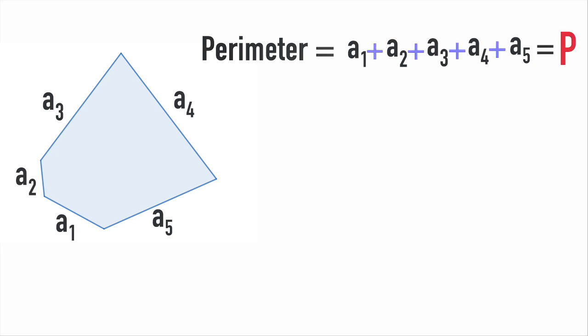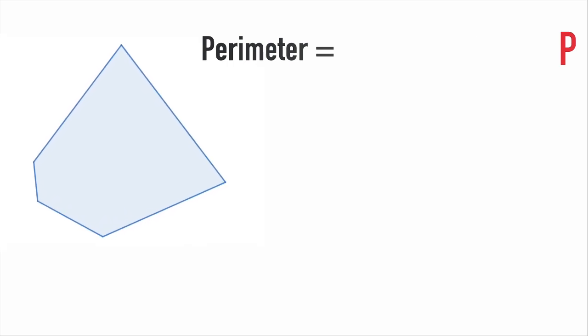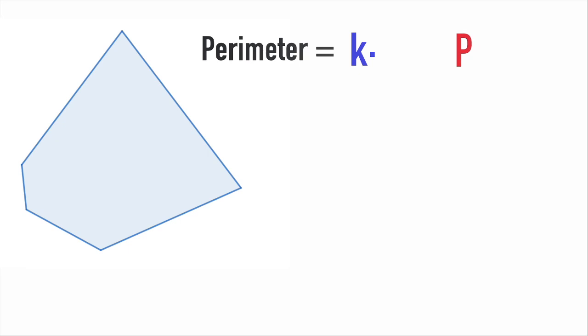For polygons, perimeter is the sum of lengths of all of its sides. Perimeter is a linear function of side length, meaning that if you increase the sides by some factor, the perimeter is going to change by the same factor.